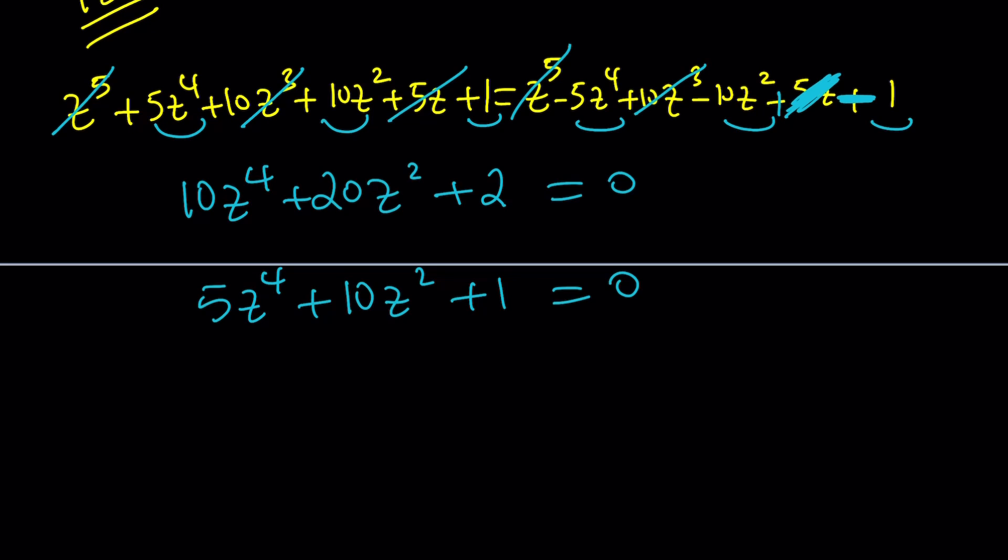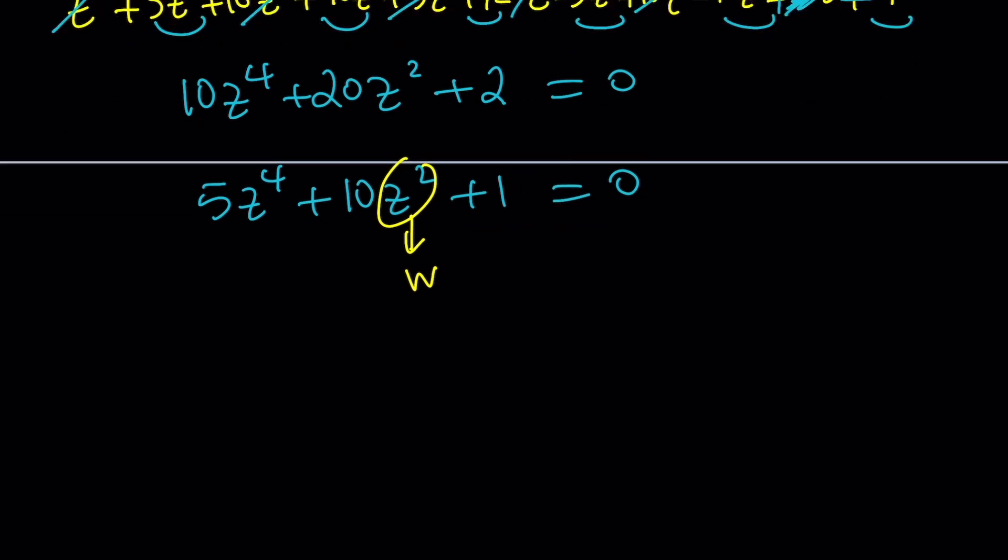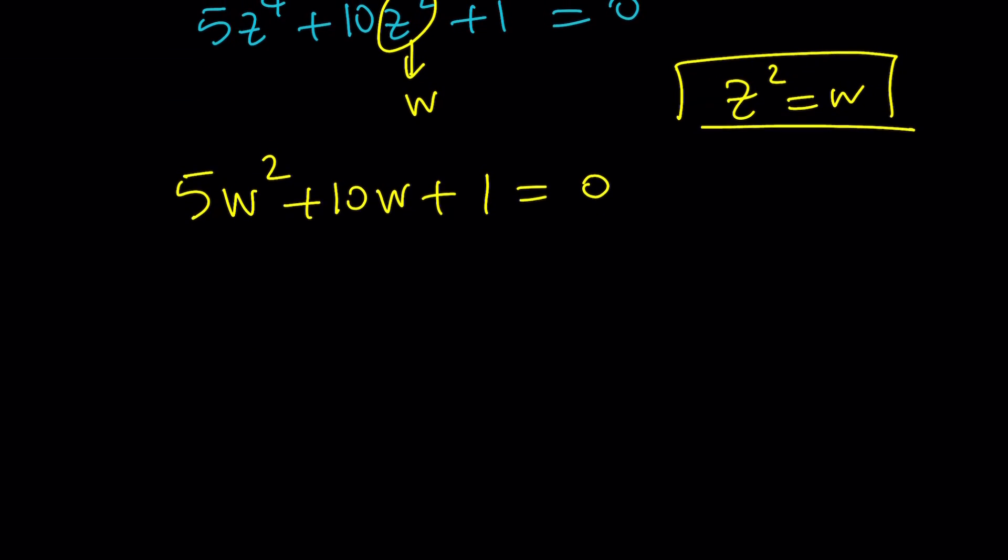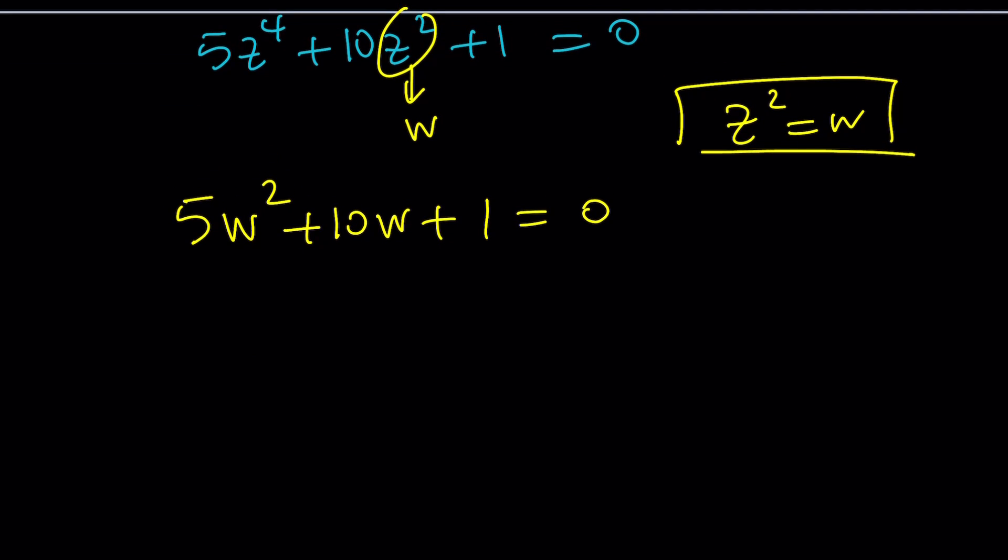which means we can replace Z squared with something to make it quadratic. So let's set Z squared equal to W. This gives us Z squared equals W. That's our formula. We're going to need that later. And this becomes 5W squared plus 10W plus 1 equals 0. This is the easiest type of quartic equation besides W to the fourth equals 1, I guess, right? So to solve this problem, we're going to use a quadratic formula because it's not factorable, at least easily.